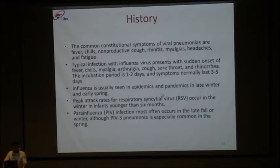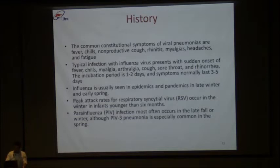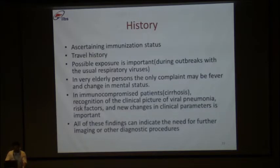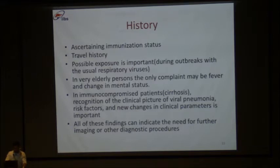Influenza is usually seen in epidemics and pandemics in late winter and early spring. Peak attack rates for respiratory syncytial virus occur in winter in infants younger than 6 months. Para-influenza infection most often occurs in late fall or winter, although PIV-3 pneumonia is especially common in spring. History of immunization, contact, travel history, possible exposure are important. In very elderly persons, the only complaint may be fever and change in mental status. Similarly, in immunocompromised patients like cirrhosis, recognition of clinical picture and risk factors is sometimes difficult.